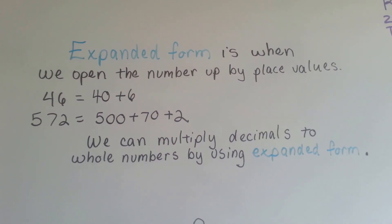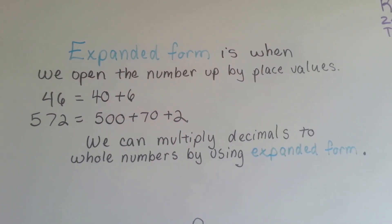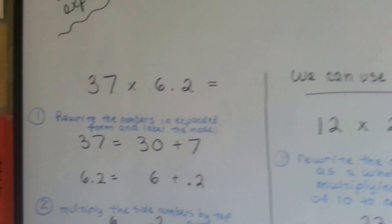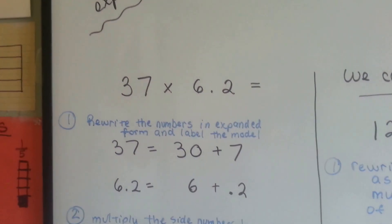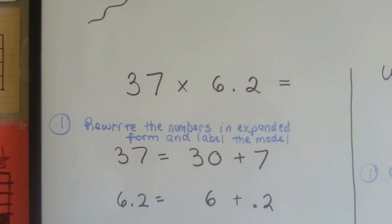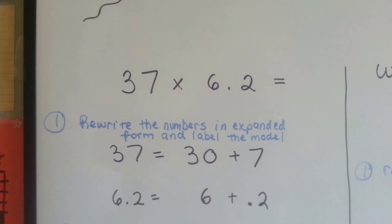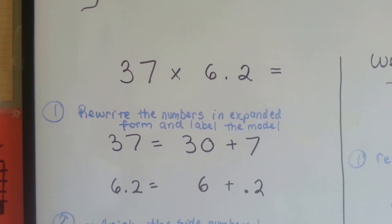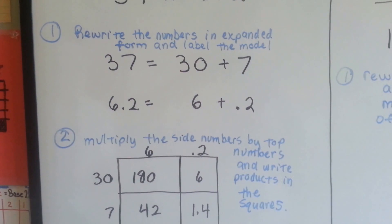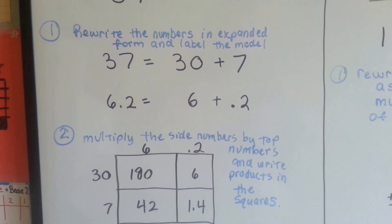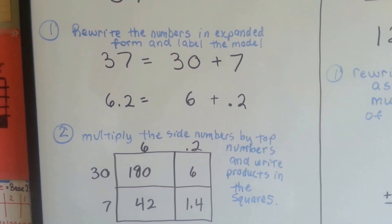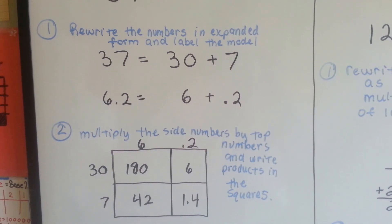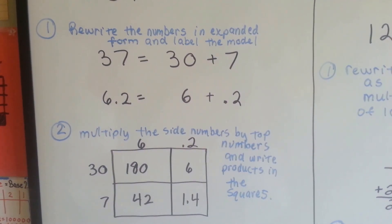We can multiply decimals to whole numbers by using expanded form. If our problem was 37 times 6 and 2 tenths, we would rewrite the numbers in expanded form and label the model. See our box model right there? 37 becomes 30 plus 7, and 6 and 2 tenths becomes 6 plus 2 tenths.